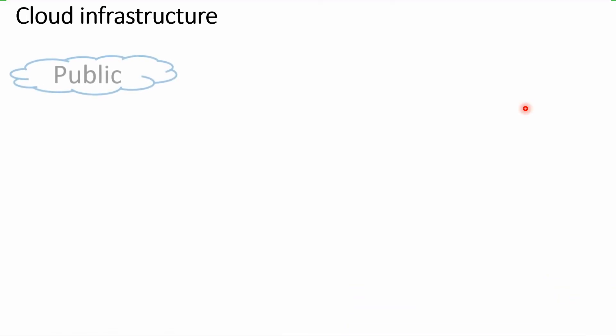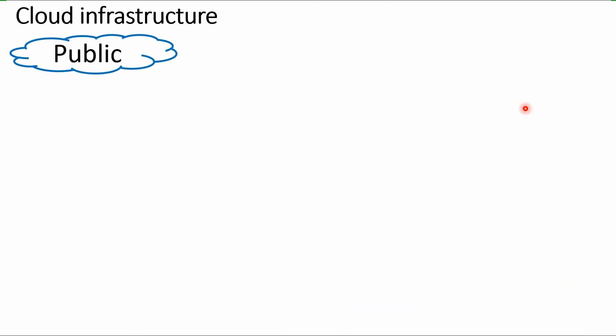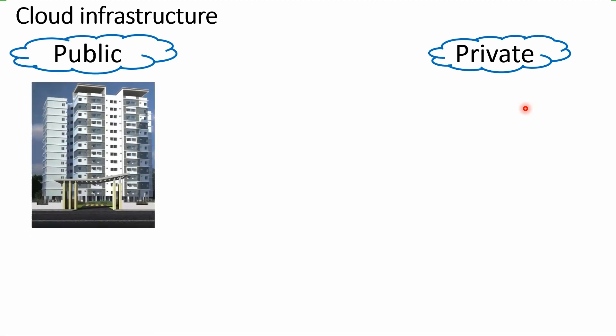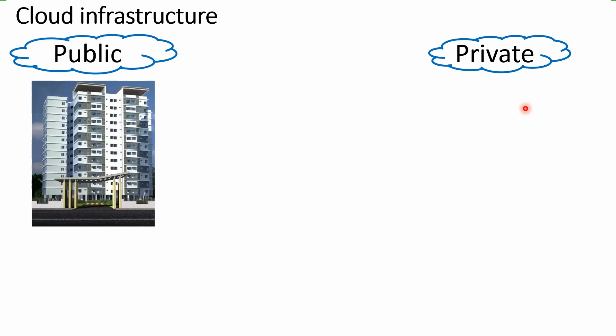As we have discussed, there can be two kinds of cloud infrastructure: public and private. Let me give you a very practical comparison between both of them. A public cloud is like renting a flat in a society.